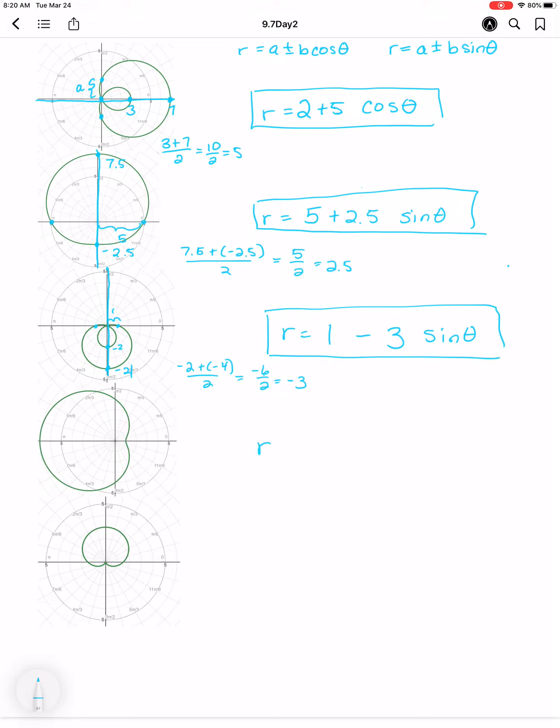All right, we're symmetric here about the polar axis. That means it's a cosine limaçon. So we are 1, 2, 3, 4 units away there. So that'll be the value of A. And then our dimples occur at the value of 1 and negative 7. So 1 plus negative 7 over 2 equals negative 6 over 2. Again, a negative 3 value. So 4 minus 3 cosine theta.